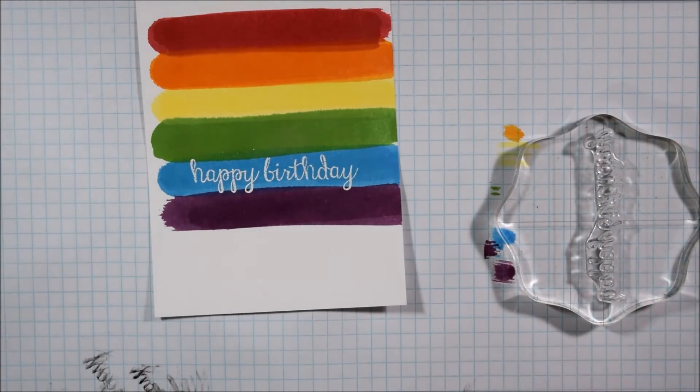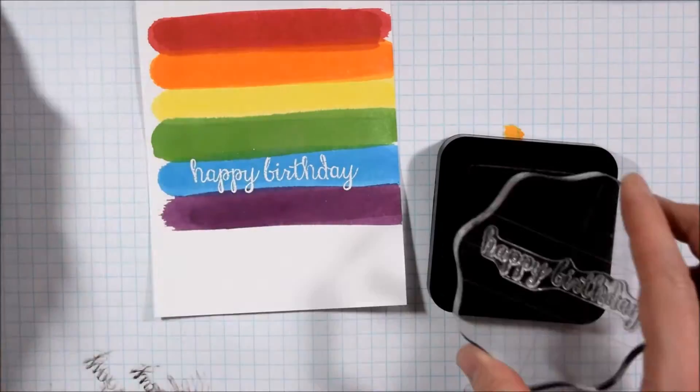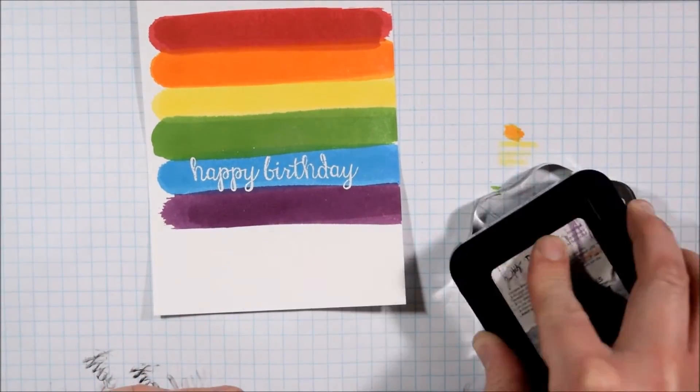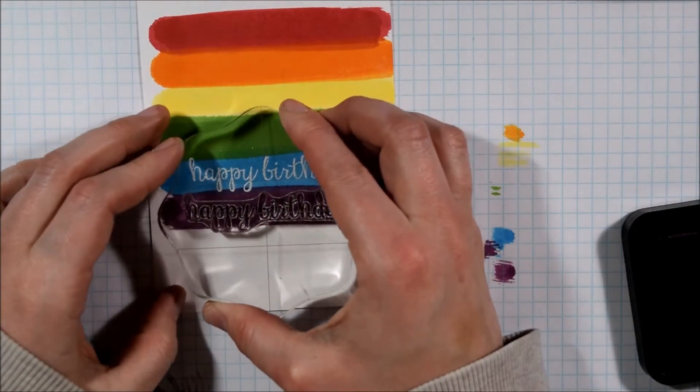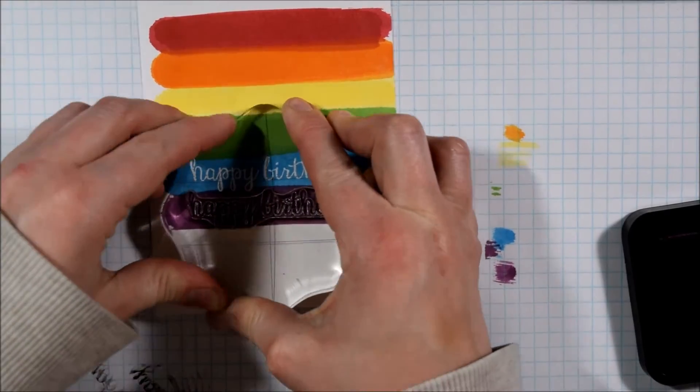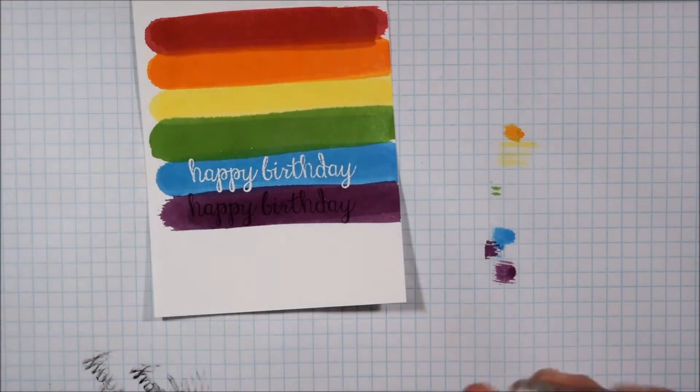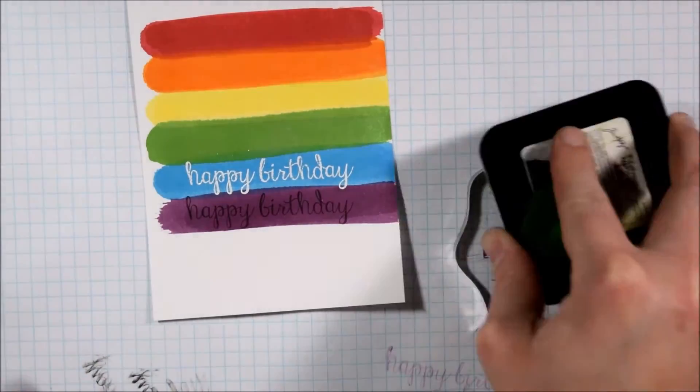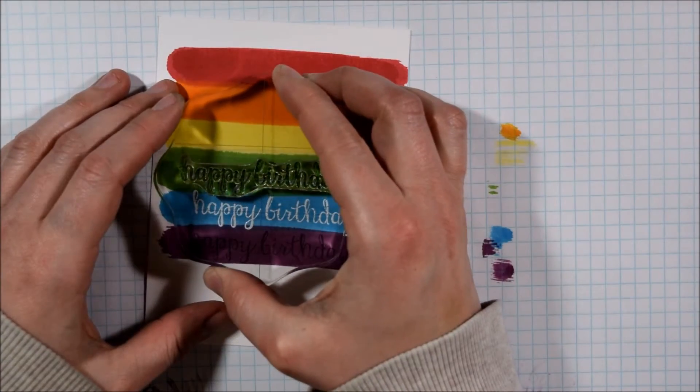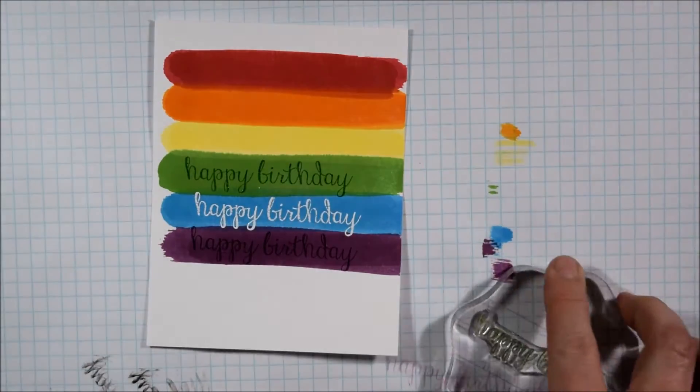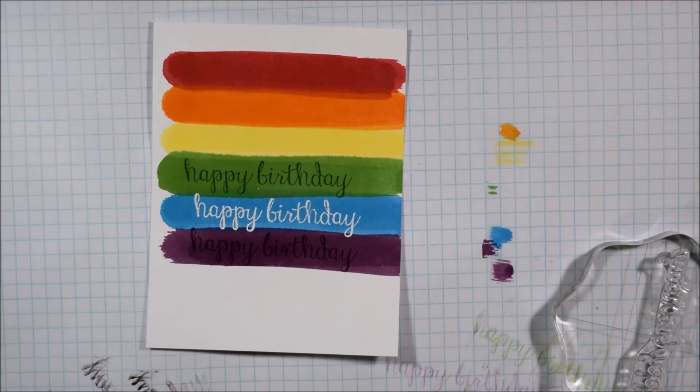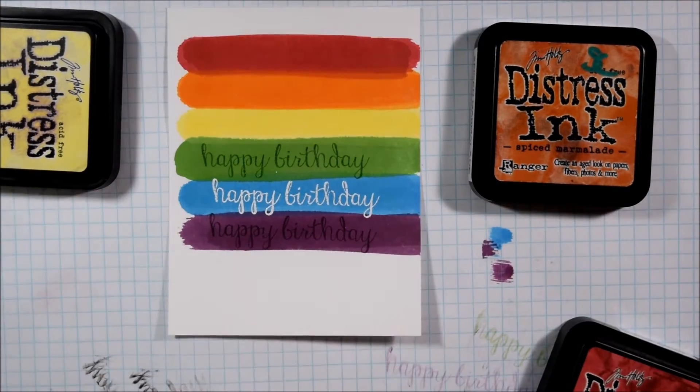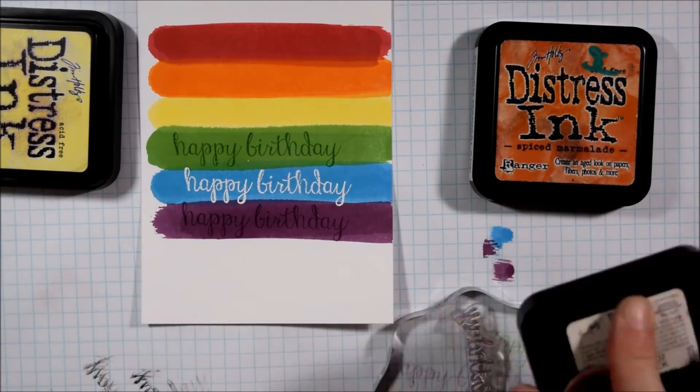And then I will take the happy birthday sentiment and stamp it in some coordinating colors of distress ink. So I happen to have a lot of distress inks and so I have the Seedless Preserves ink that matches the Seedless Preserves distress stain. However if you don't have a whole variety of distress ink colors you could use a color that is close, like any green is going to look good. I'm happening to use Mowed Lawn Distress Stain with Mowed Lawn Distress Ink. However any green is still going to give a very similar effect.